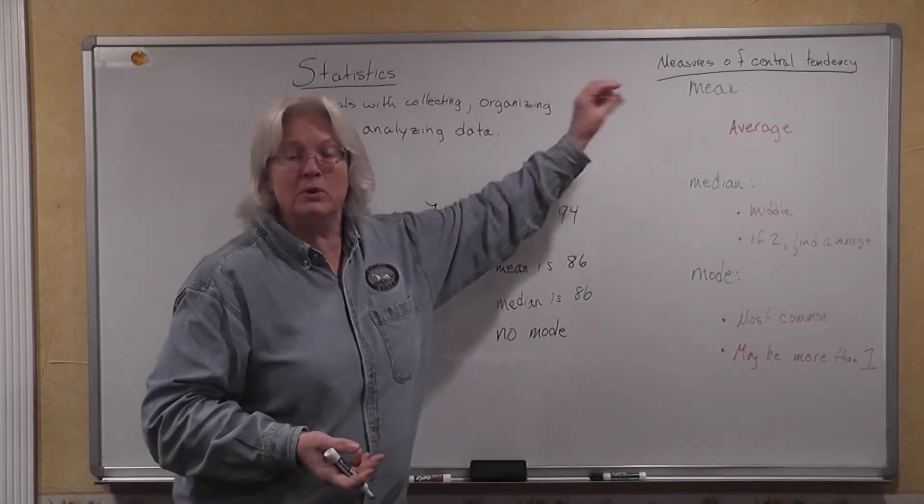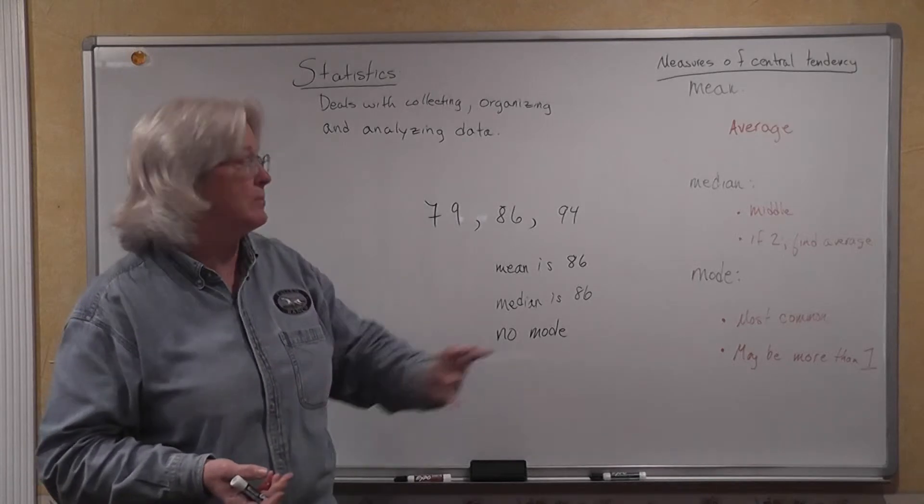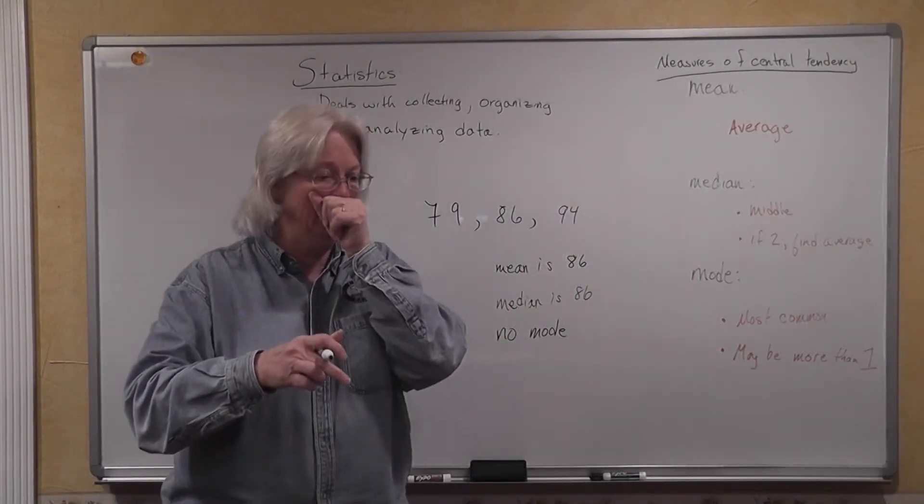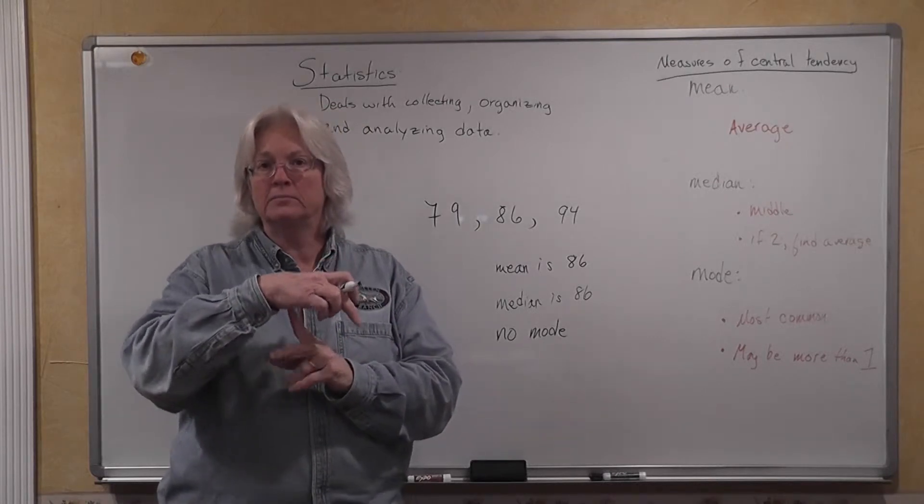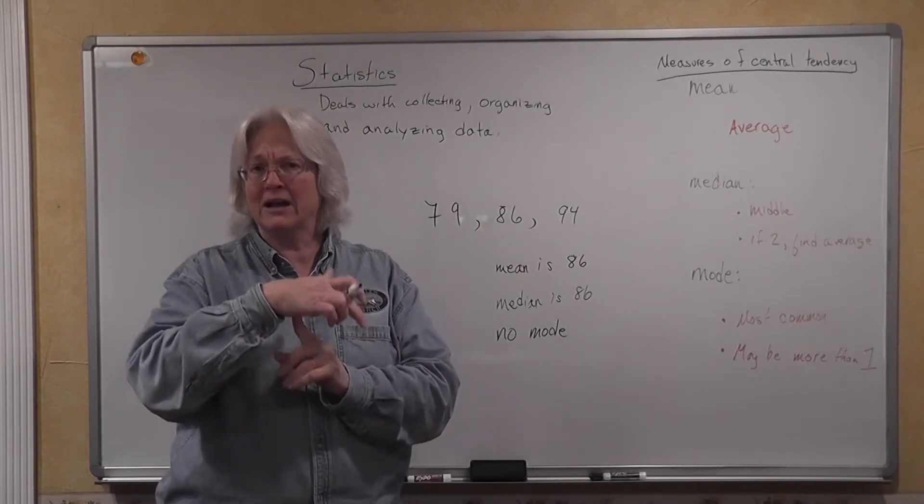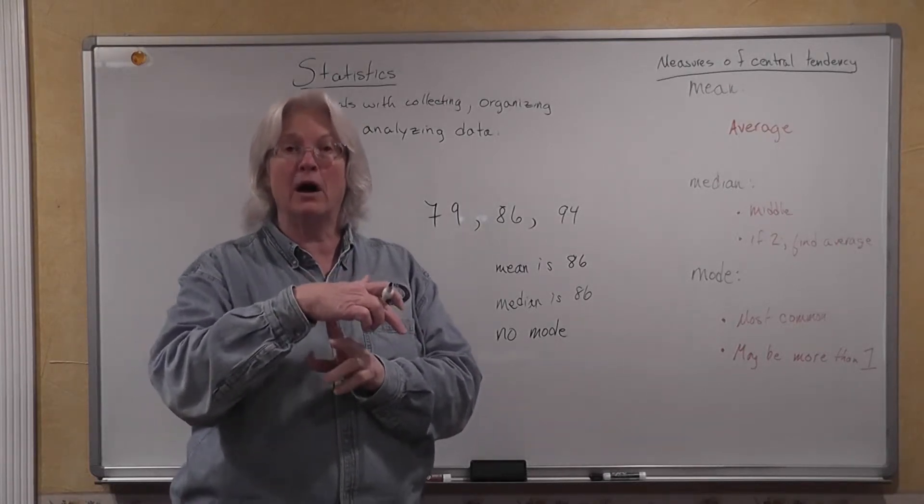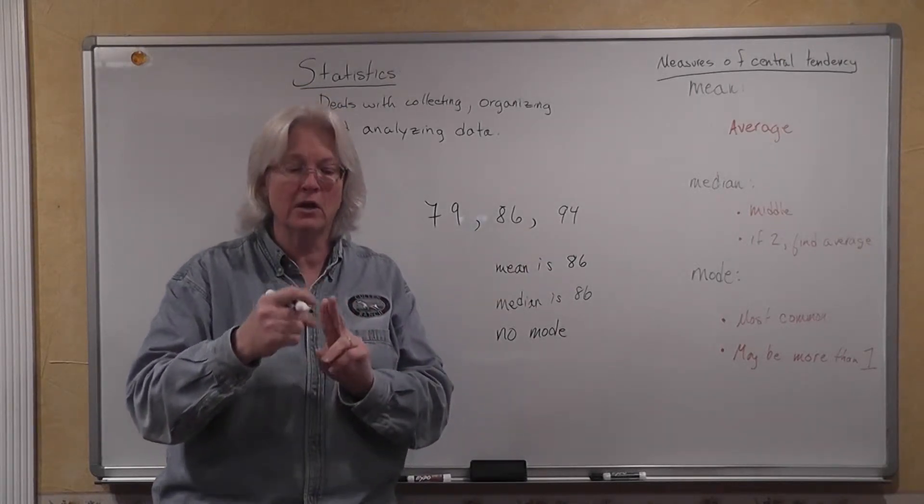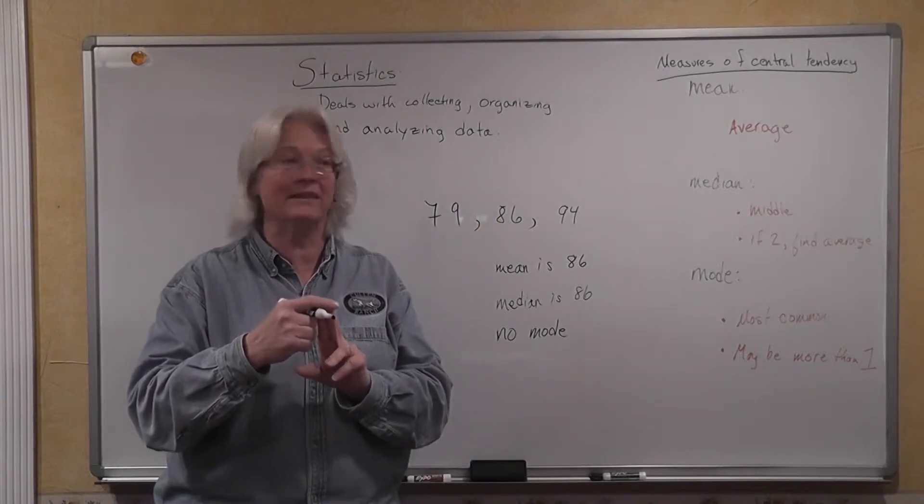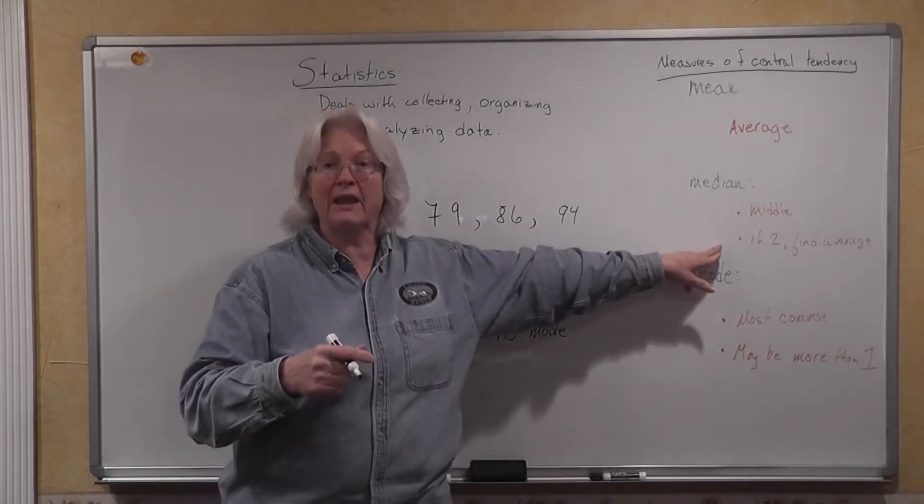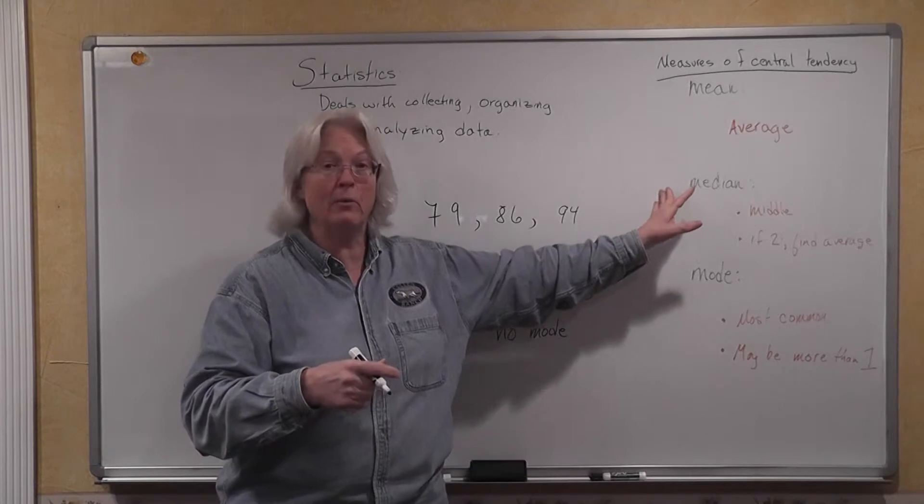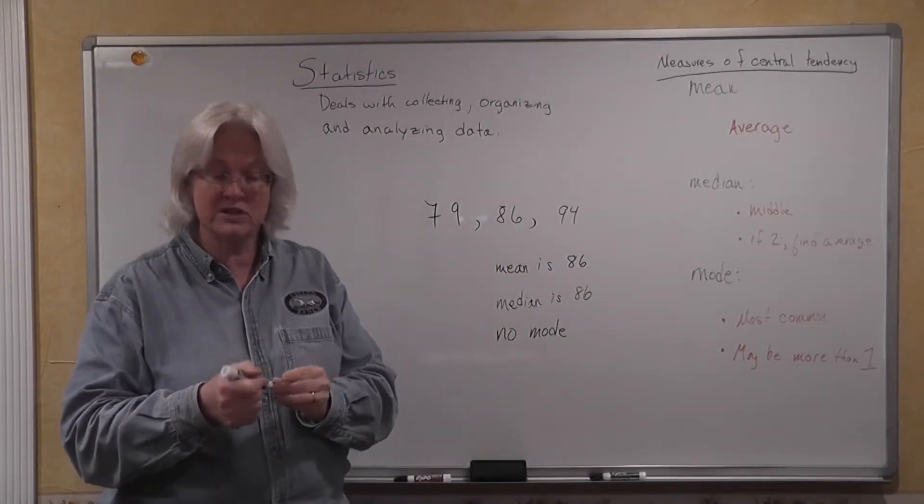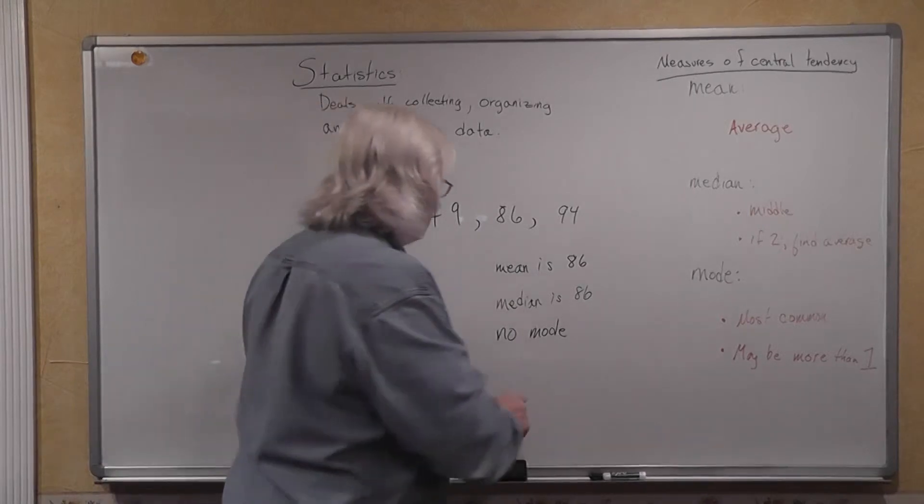That's really all that's involved in this first section here. Talking about the mean, which is the average of a collection of numbers. The median, which is that middle number. And you're only going to have an actual middle number if you have an odd number of pieces of data. If you have an even number of pieces of data, you're going to have two middle numbers. And at that point, you're going to find the average of those two numbers, and that will be your median. Then your mode is the number that occurs, number or numbers that occur most frequently.